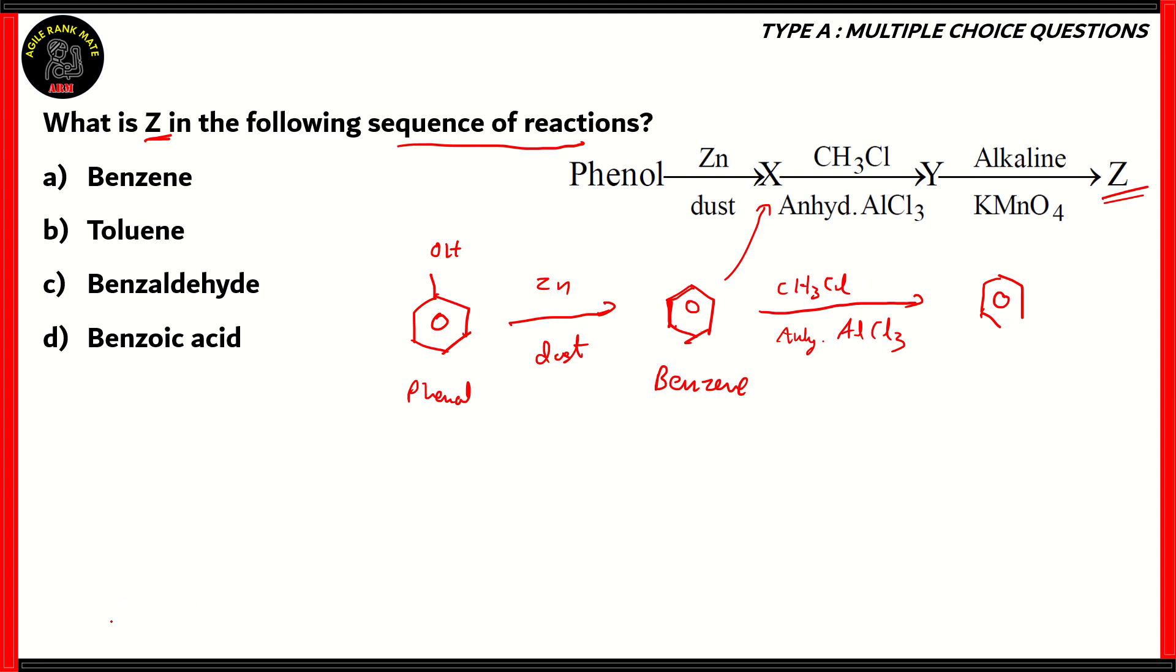So what we get is benzene with a methyl group, and this is what we call toluene. That would be the product Y. As you can see, options A and B are incorrect because they are not the product Z. They are the products X and Y, respectively.